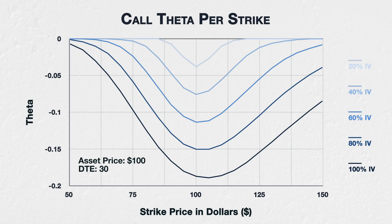Remember that implied volatility is essentially just a way of writing the option prices in the form of an annualized volatility. This allows for much easier analysis and comparison. Assuming all other parameters remain the same, as they do here, higher implied volatility means higher option prices, which in turn means they have more value to lose in the same amount of time, therefore theta, or time decay, is also higher.